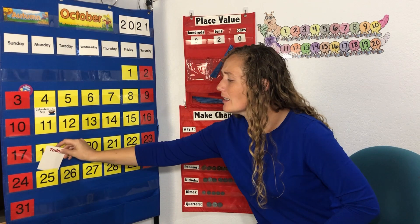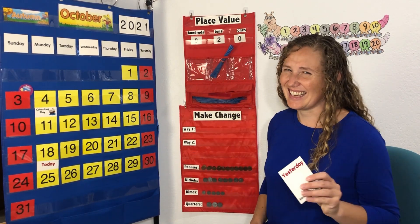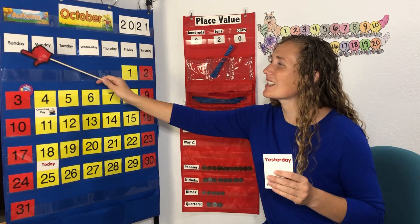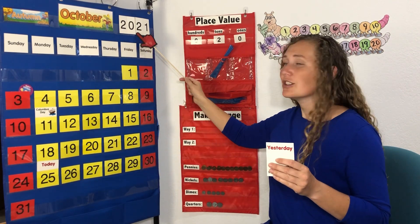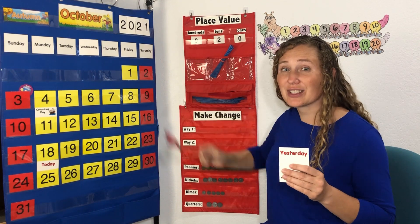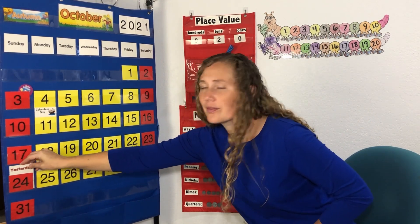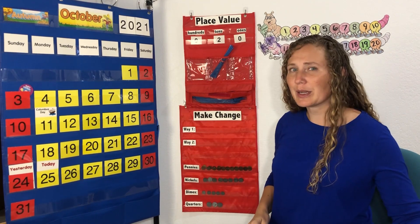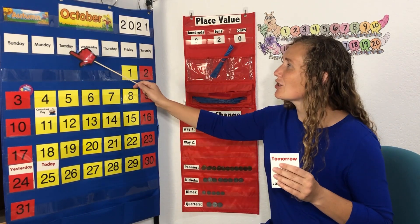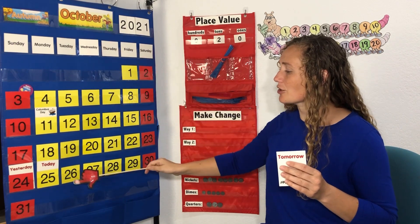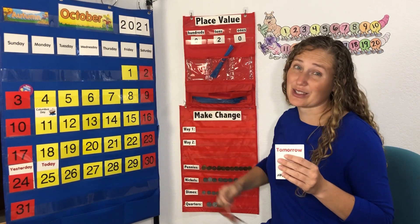Do you know what yesterday was? Yes, yesterday was Sunday, October 24th, 2021. What about tomorrow? What will tomorrow be? Tomorrow will be Tuesday, October 26th, 2021.